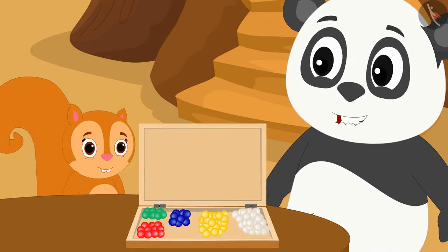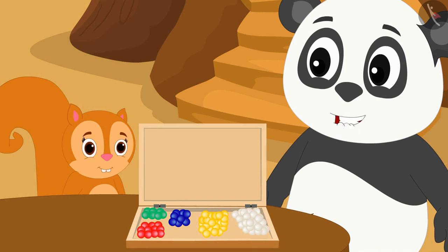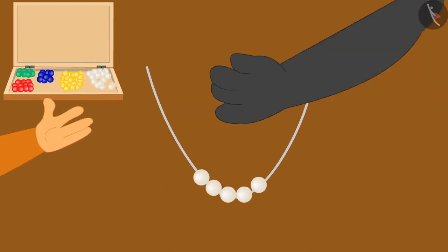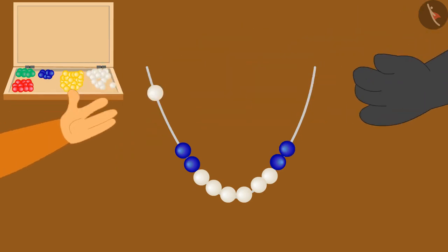Chanda liked Golu's suggestion very much. Now Chanda and Golu together made a necklace of white and blue beads for uncle.